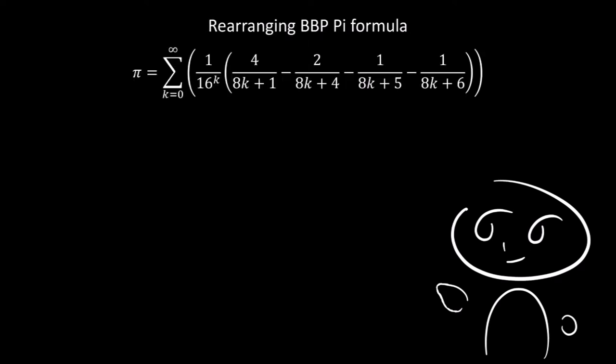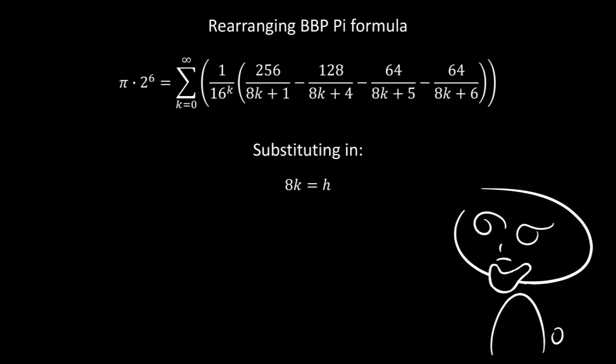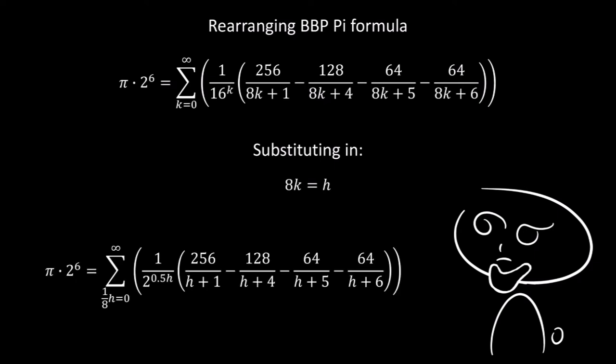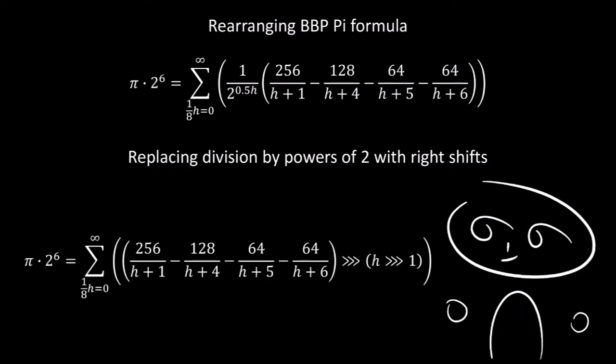So now we need to rearrange the BBP formula. We first multiply by 2 to the power of 6, which gives us the equation below. What I have done is multiplied the numerators of all four of the inner fractions by 2 to the power of 6. To further simplify the equation, we can substitute in h, where h equals 8k. This gives us the equation below. The final thing to do with the BBP formula is to replace the division by powers of 2 with right shift. This gives us the equation below.